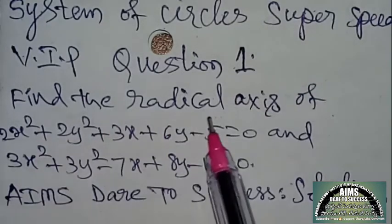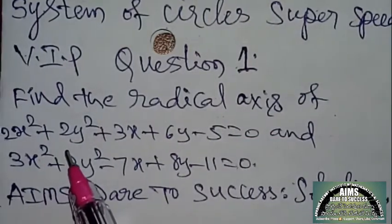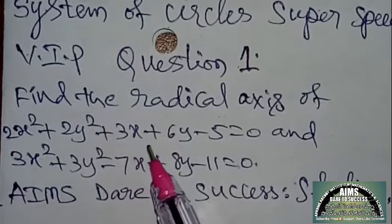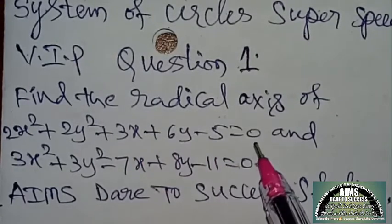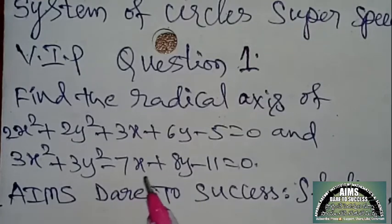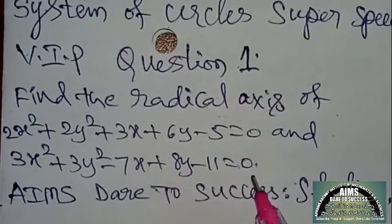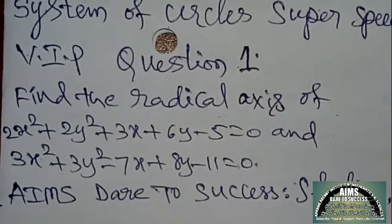Find the equation of radical axis of 2x² + 2y² + 3x + 6y − 5 = 0 and 3x² + 3y² − 7x + 8y − 11 = 0. I am straight to success solution.